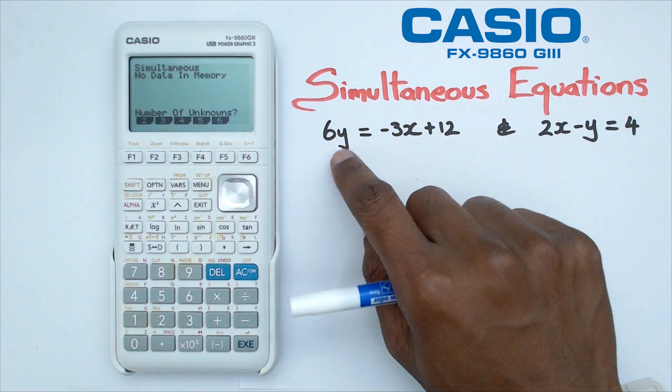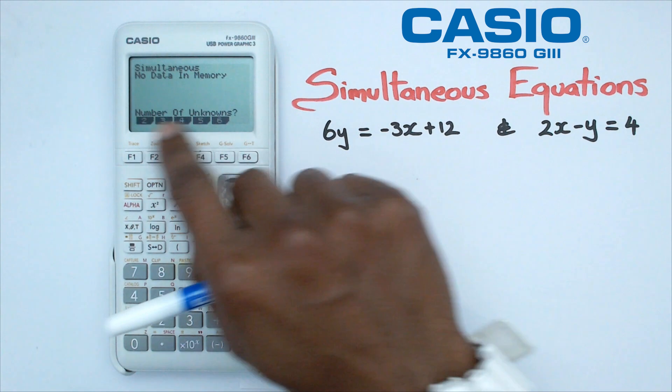Because we have X and Y, the number of unknowns that we have is 2. So we're going to click on 2.